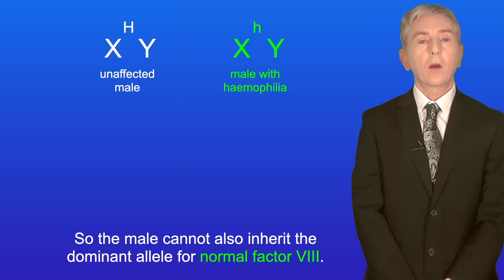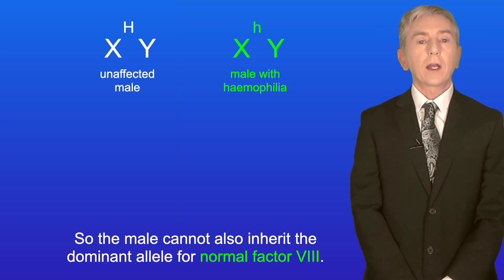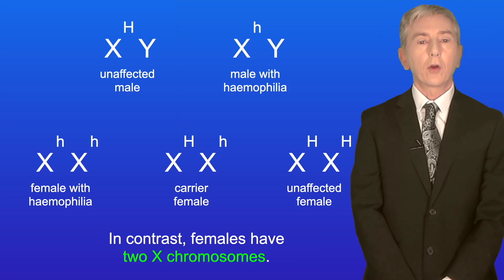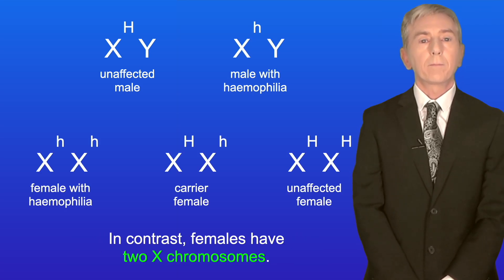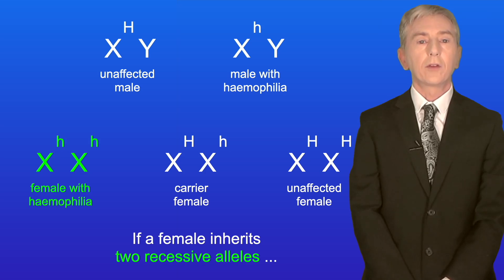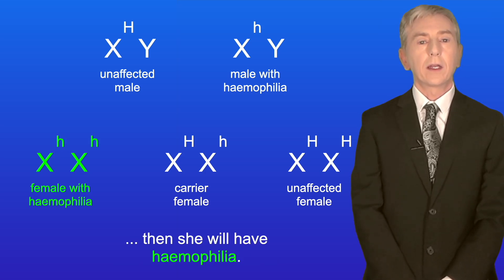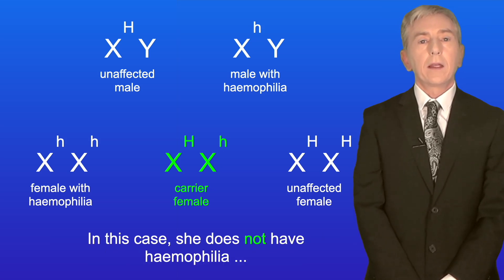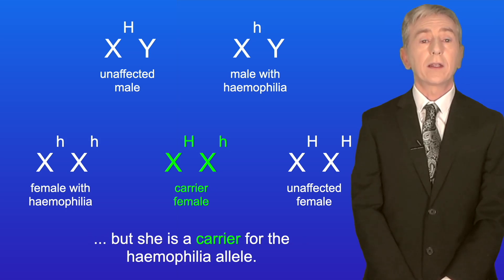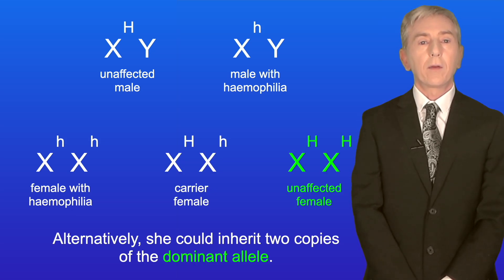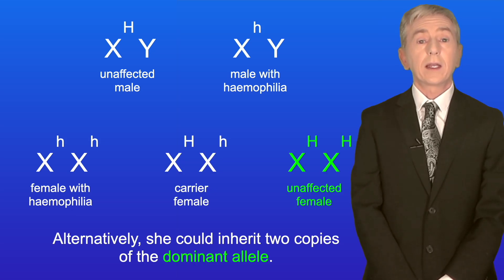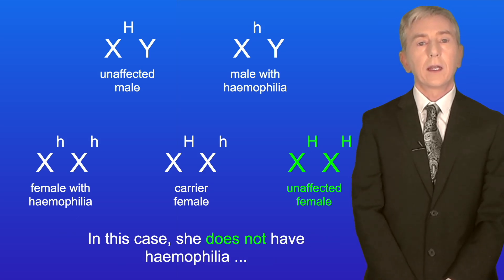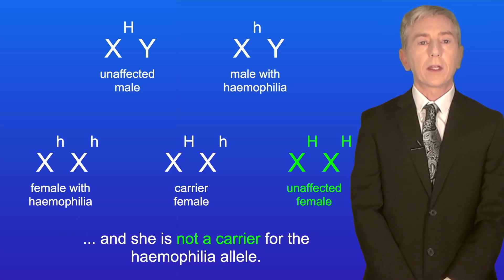In contrast, females have two X chromosomes. If a female inherits two recessive alleles, then she will have haemophilia. However, she could inherit one recessive allele and one dominant allele — in this case she does not have haemophilia, but she is a carrier for the haemophilia allele. Alternatively, she could inherit two copies of the dominant allele, in which case she does not have haemophilia and she is not a carrier.